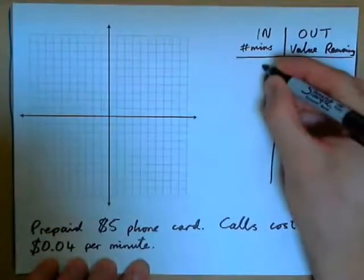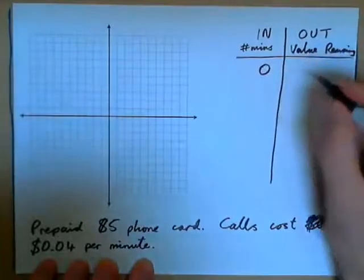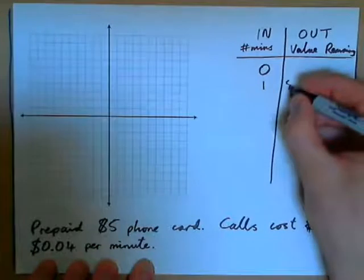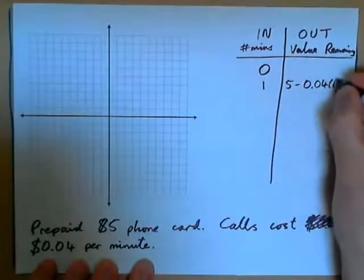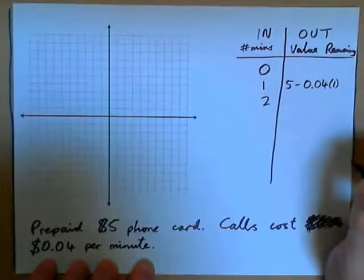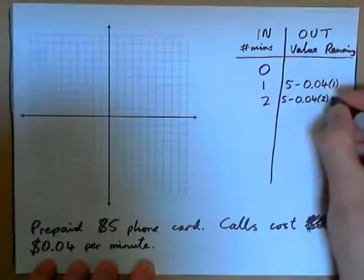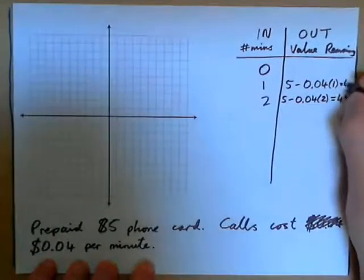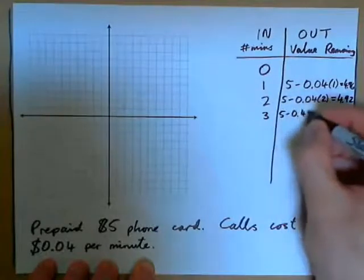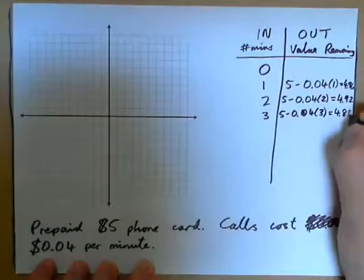If the number of minutes is 0, the value remaining is simply $5.00. If we talk for 1 minute, it's $5 minus $0.04 times 1. For 2 minutes, it's $5 minus $0.08 — that's $4.92. This would be $4.96 for 1 minute. For 3 minutes, $5 minus $0.04 times 3.